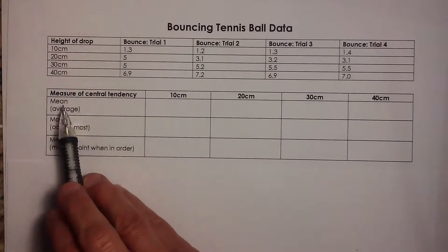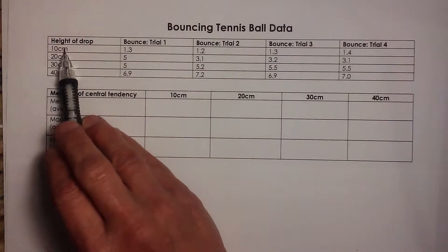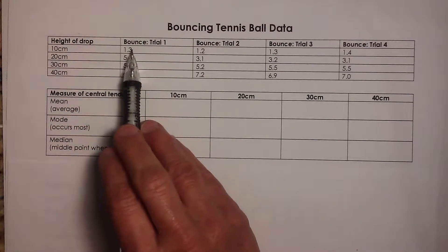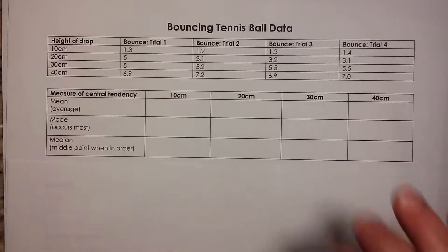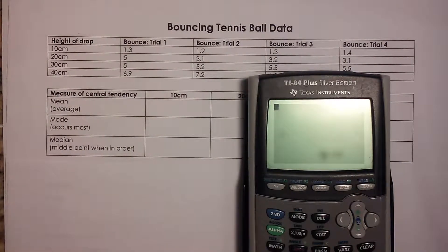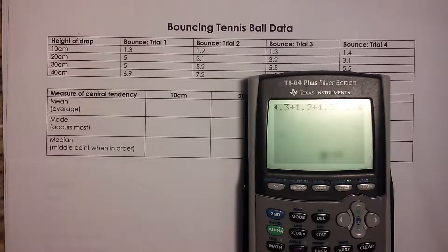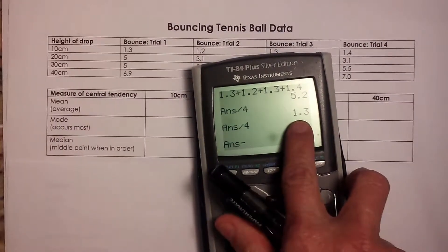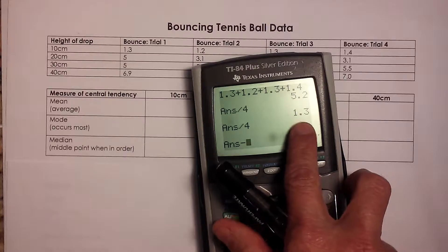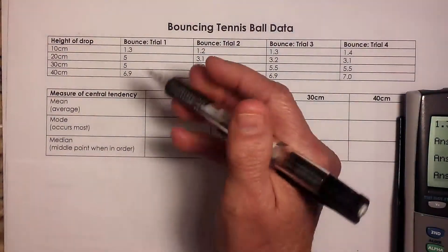The first measure of central tendency we're going to look at is the mean. So what is the mean? The mean is the average. So we're going to take the four trials, 1.3, 1.2, 1.3, and 1.4, and we're going to average those. So I'm just going to grab my calculator and we're going to add 1.3 plus 1.2 plus 1.3 plus 1.4, get a total, that's 5.2, but we're going to divide it by four to get the average. So the average for the from 10 centimeters was a 1.3. So that was my average.